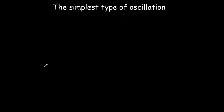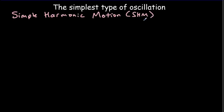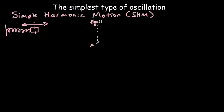We begin with the simplest type of oscillation, called simple harmonic motion, or SHM for short. A classical example of simple harmonic motion is a mass on a spring. We can imagine we've got a mass on a spring oscillating back and forth about some equilibrium position. It's conventional to say that the position is zero at equilibrium. If we displace our mass to the right of equilibrium, the displacement vector is x, and there's a force from the spring pulling that mass in the opposite direction.